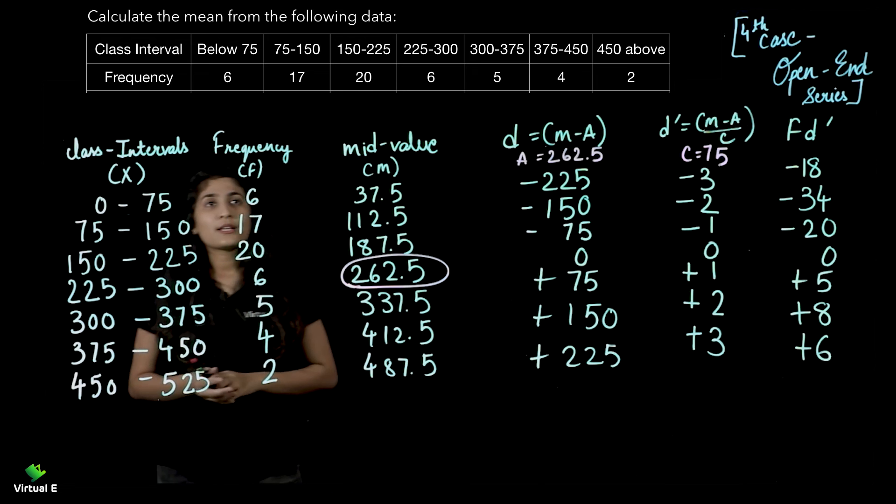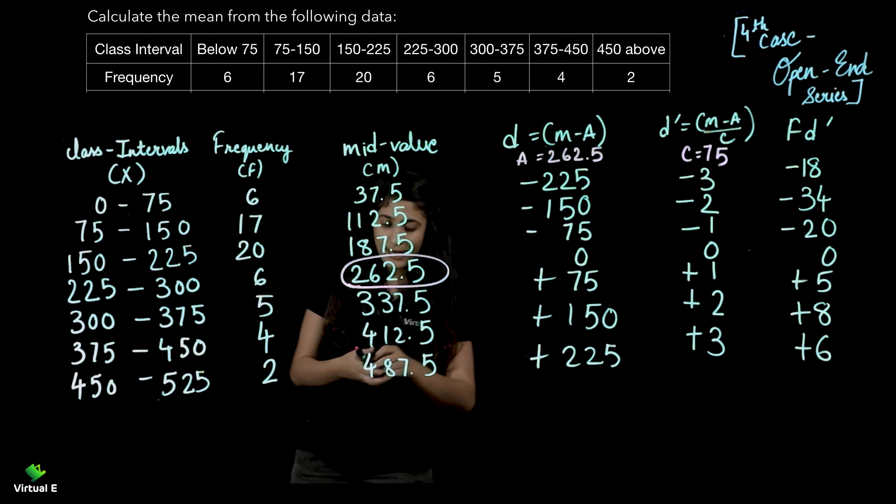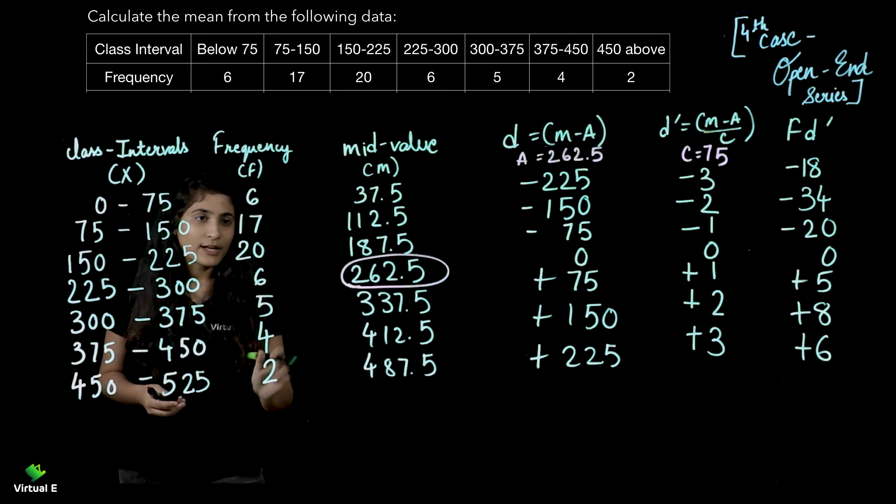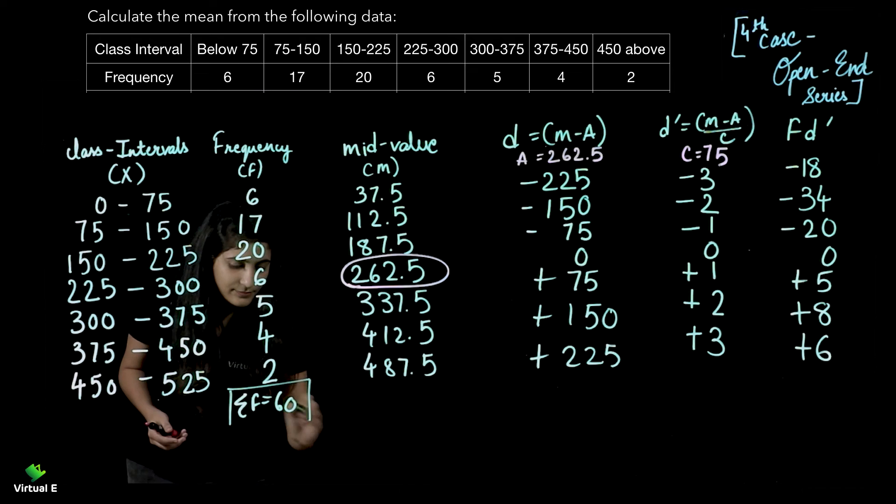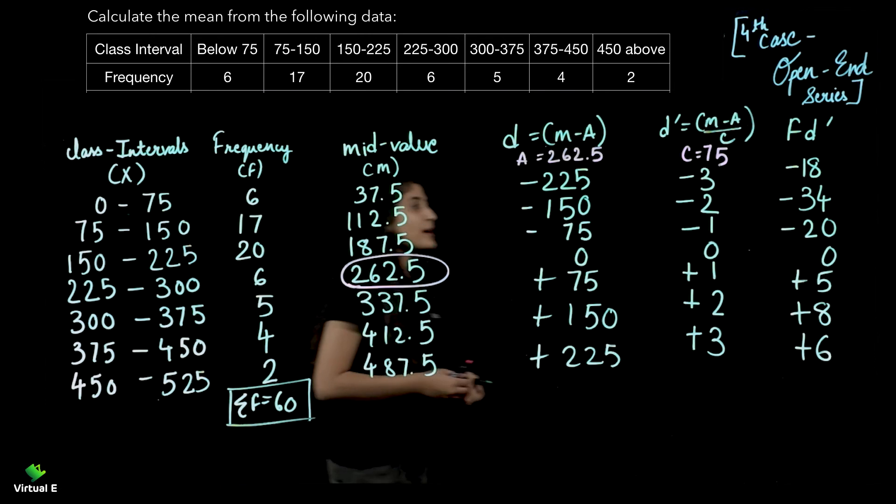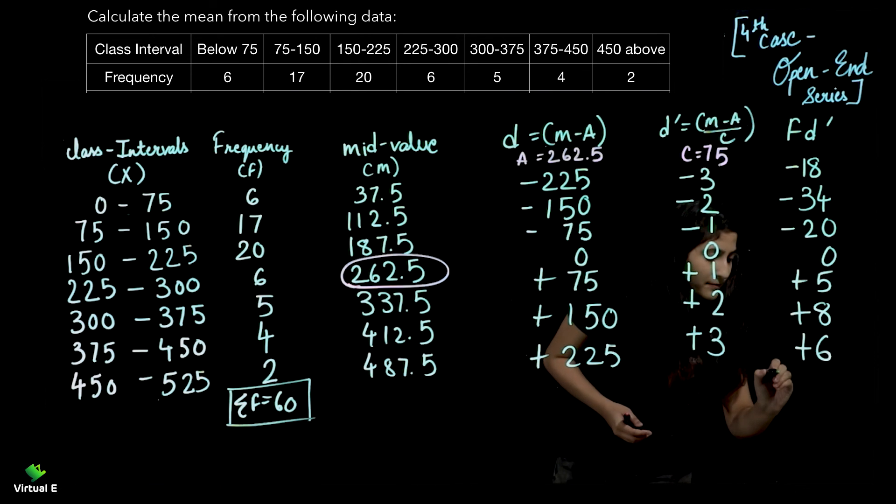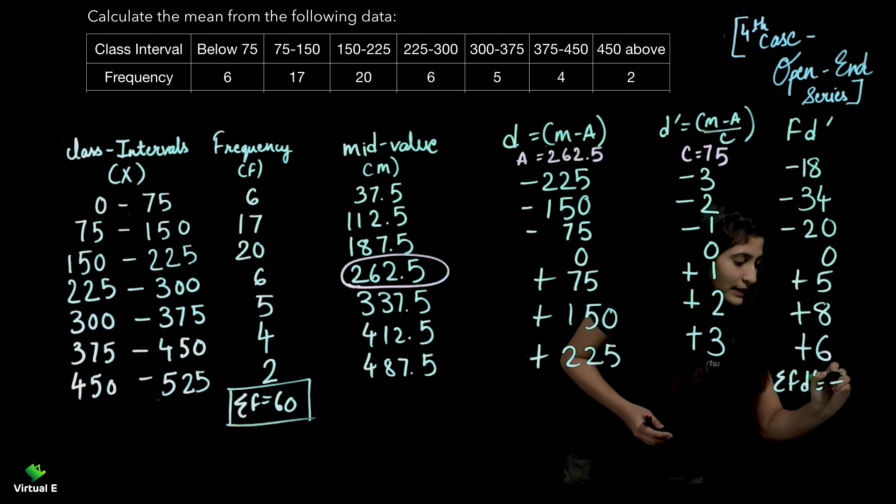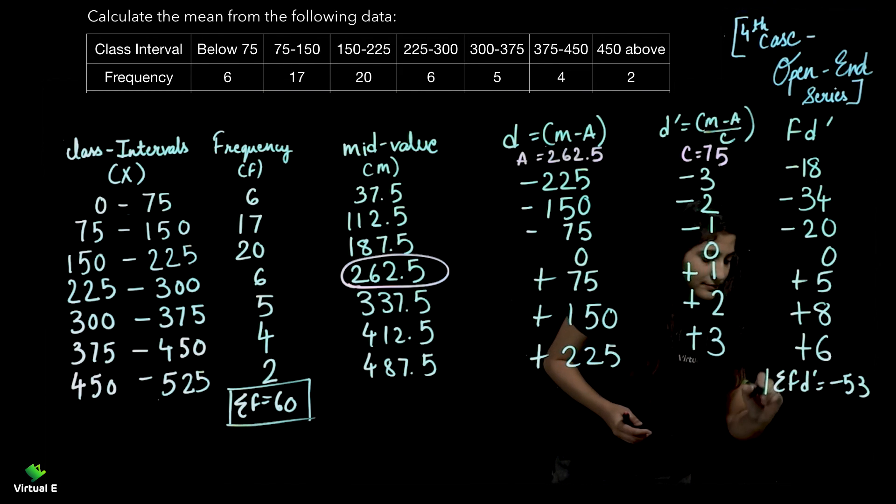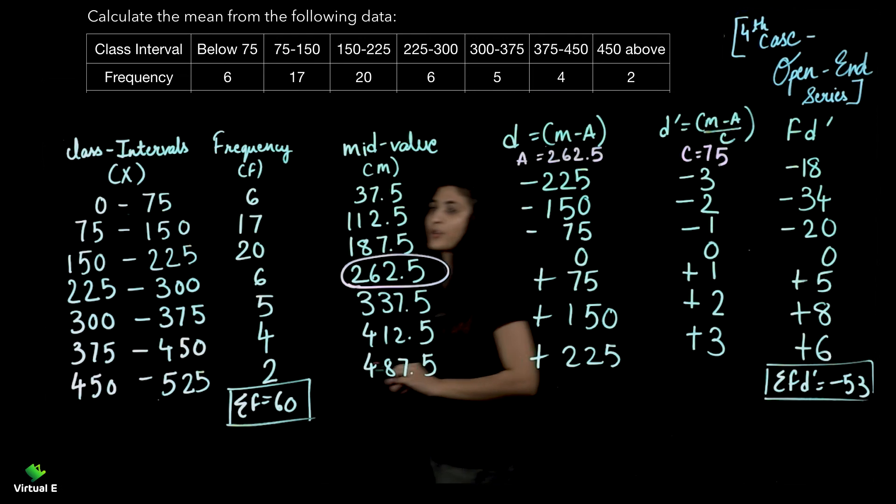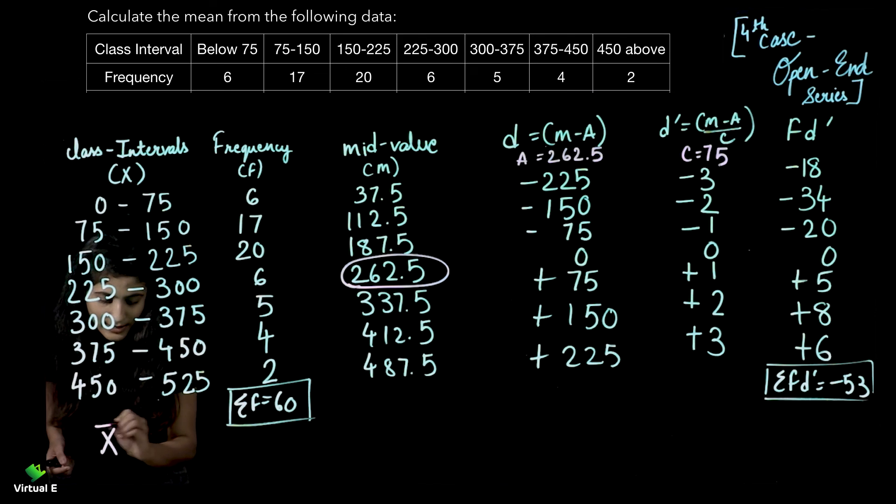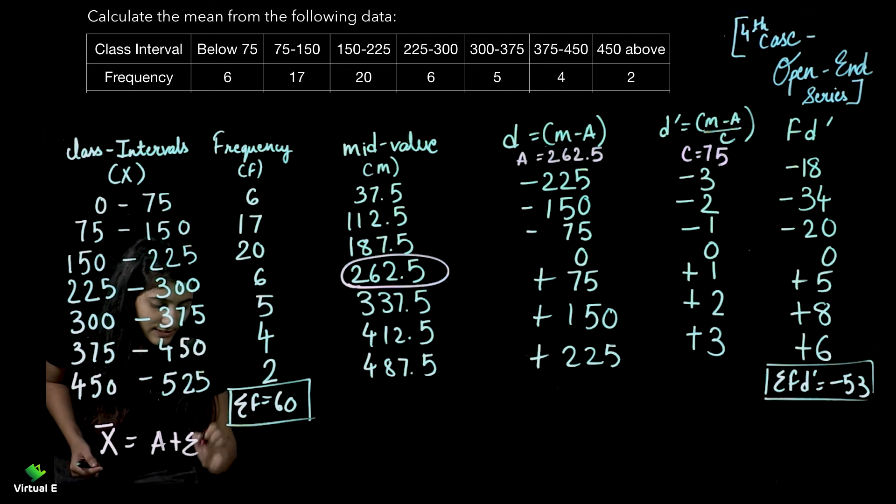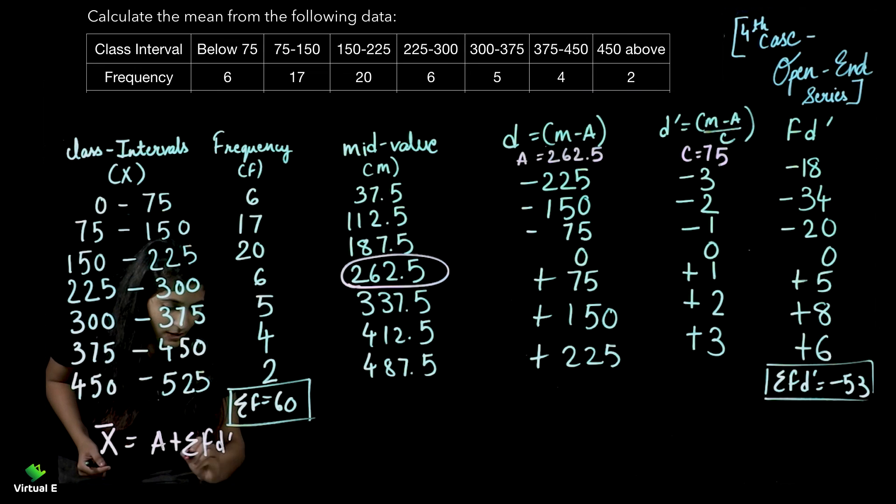Formula ke liye humay kya chahiye? Sigma F and Sigma F D dash. So first of all, Sigma F is 60 and Sigma F D dash is minus 53. Let's put all the values into the formula. Formula kya hai humara? X bar equals A plus Sigma F D dash upon Sigma F into C.